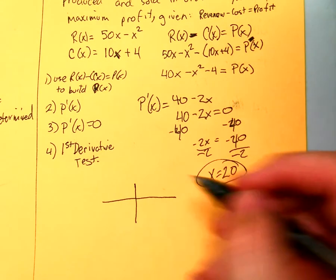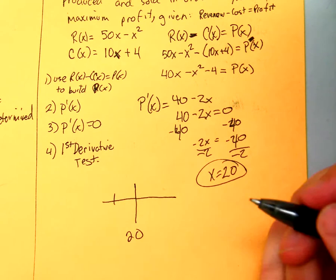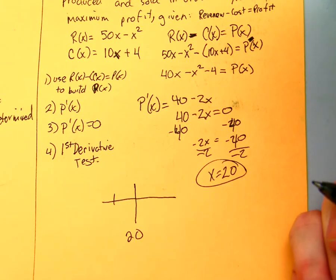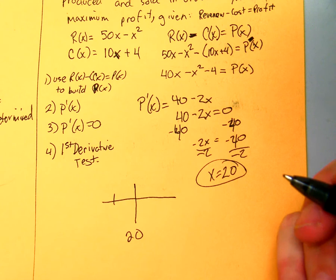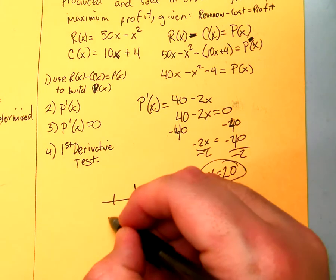So we got 20. I'm going to put in... Well, is 0 in the domain? Are we going to sell 0? I'll put in 10 and I'll put in 25.